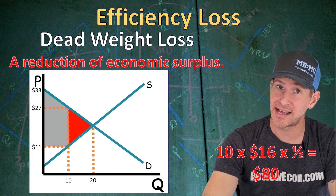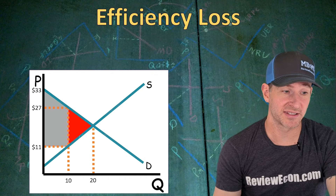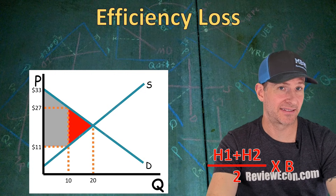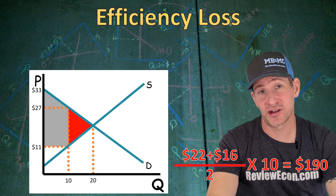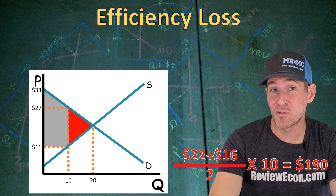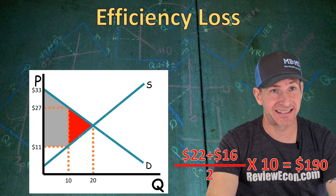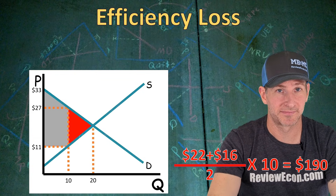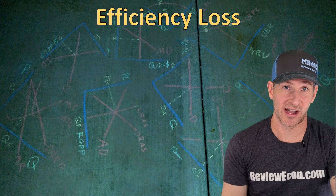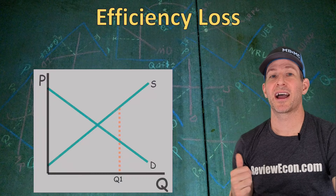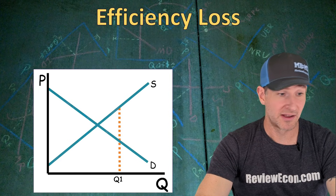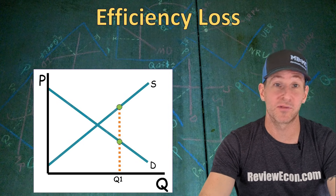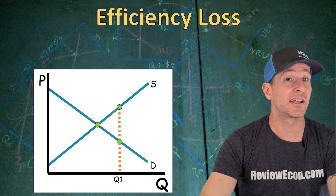That $80 is economic surplus we could have had but lost because we didn't reach equilibrium. You can also get deadweight loss from overproduction, and you'll see that more in unit six when you learn about negative externalities. If we're producing Q1 which is greater than the equilibrium quantity, we find the marginal benefit of that quantity on the demand curve, the marginal cost on the supply curve, and the allocatively efficient point where marginal benefit equals marginal cost. Those three points again give us our deadweight loss triangle.